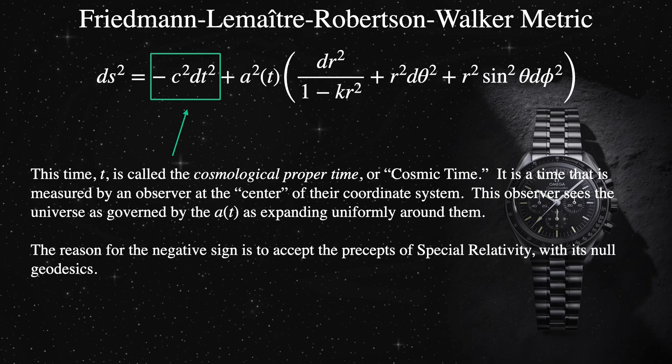Our current choice for cosmic time being the time measured by the observer at the center of the coordinate system can be more accurately stated as the time measured by a fundamental observer surrounded by objects in a co-moving coordinate system that is being carried by the expansion described by the scale factor. But what does that mean?